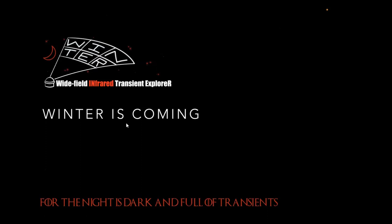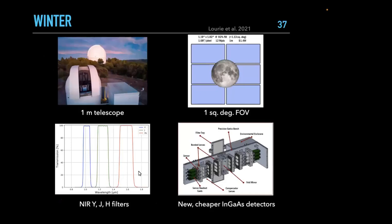This is where WINTER comes in — the Wide-field Infrared Transient Explorer. The name naturally lends itself to Game of Thrones references: 'Winter is coming' and 'for the night is dark and full of transients.' WINTER is a one-meter telescope, much bigger than PGIR's 30 centimeters, with a one square degree field of view operating in Y, J, and H filters — covering roughly 1 to 1.6 microns.